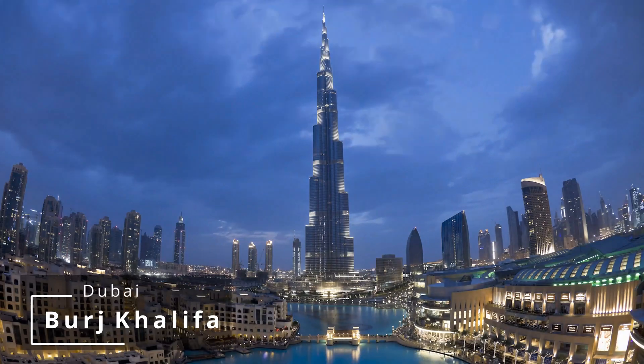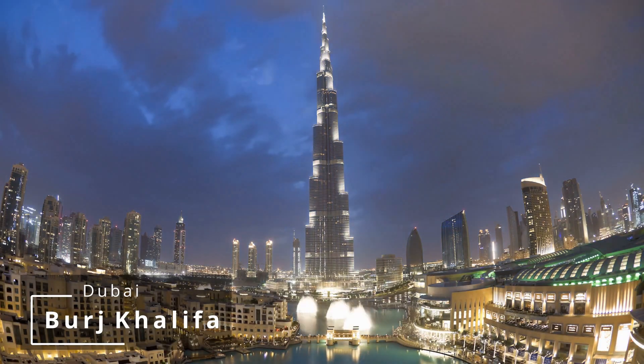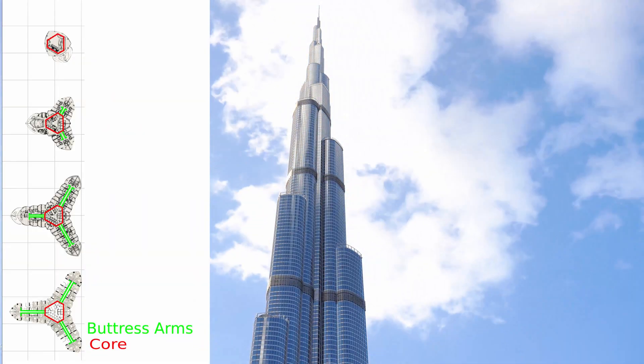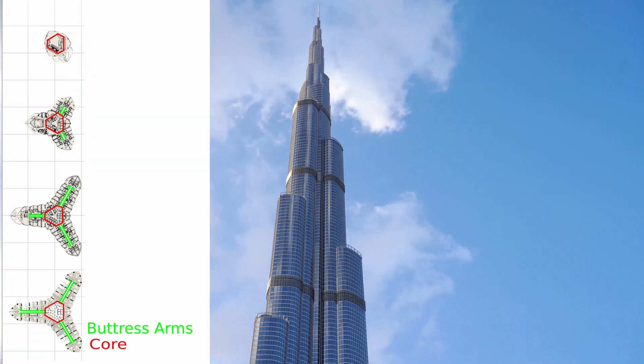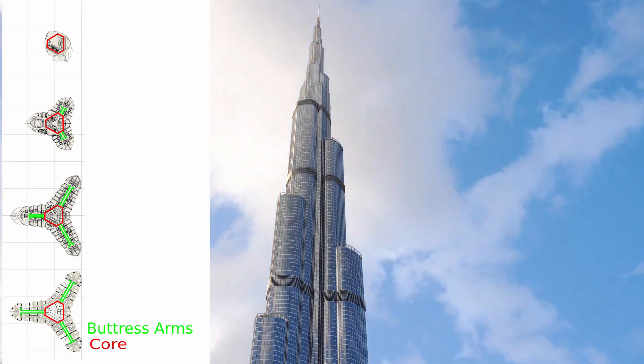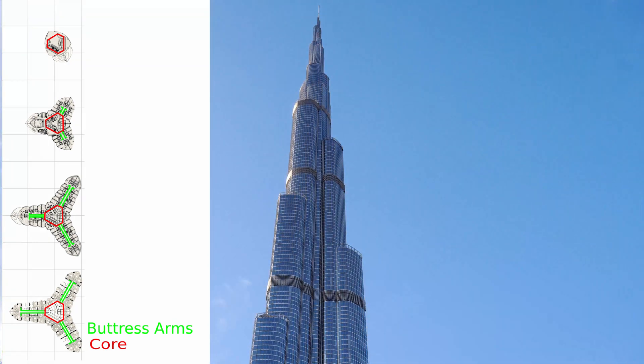Now let's move on to the Burj Khalifa — the monster super-tall in Dubai towering at almost 900 meters, dwarfing all surrounding skyscrapers. The stability system of the Burj Khalifa is a buttress system: the central core is an octagon shape with a series of buttress arms forming a Y-shape around the outside. These buttress arms are widest at the base and taper in as the tower goes up, providing a very wide and stiff stability system at the base. As it goes up, the stability system moves further in as it needs less lever arm to stabilize the structure.